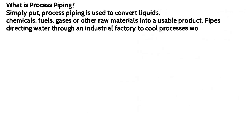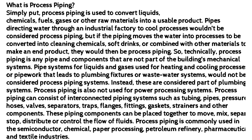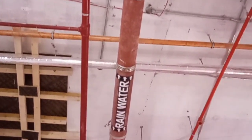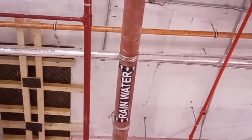What is process piping? Simply put, process piping is used to convert liquids, chemicals, fuels, gases or other raw materials into a usable product.